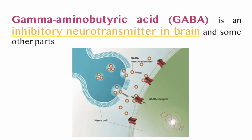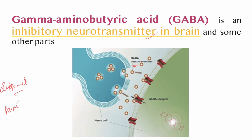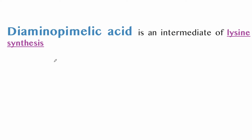Gamma-aminobutyric acid (GABA) is an inhibitory neurotransmitter in the brain and other parts of the central nervous system. Its natural function is to reduce the activity of neurons to which it binds, inhibiting nerve transmission in the brain and calming nervous activity. It is generally sold as a dietary supplement; basically the role of GABA is to regulate anxiety. Diaminopimelic acid is an intermediate in lysine synthesis.